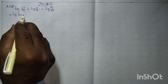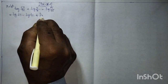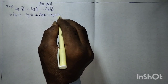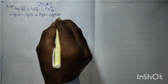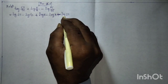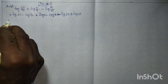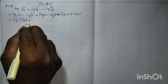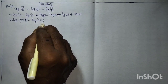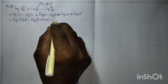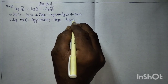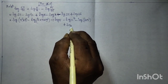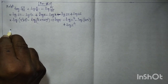Expand as: log 63 minus log 42 plus log 5 minus log 8 minus log 15 plus log 16. This equals log(3² × 7) minus log(2 × 3 × 7) plus log 5 minus log(2³) minus log(3 × 5) plus log(2⁴).